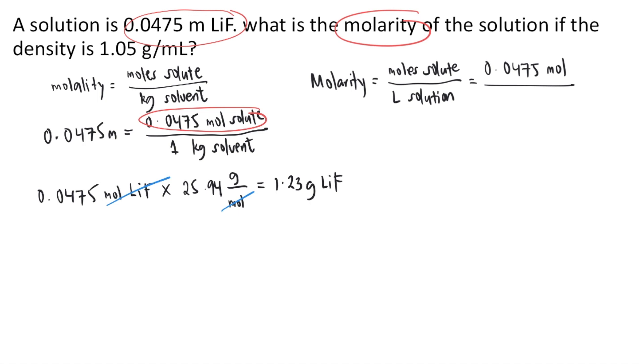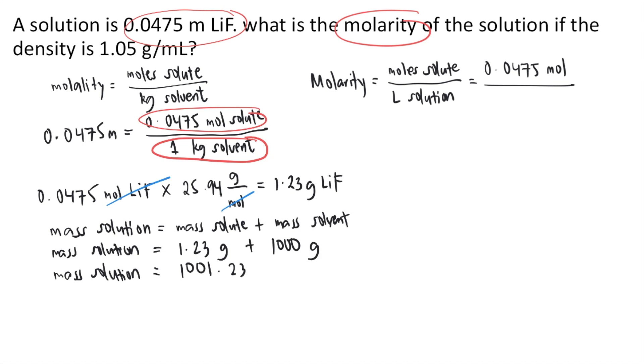So the mass of our solute is 1.23 grams. Now after getting the mass of solute, you can solve for the mass of the solution. Remember, mass of solution is just the mass of solute plus the mass of the solvent. We already solved the mass of solute, that's 1.23 grams, plus the mass of our solvent. Earlier we said there's 1 kilogram of solvent, which is equivalent to 1,000 grams. So the mass of the solution is 1.23 plus 1,000, that's 1,001.23 grams.